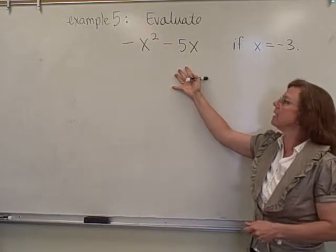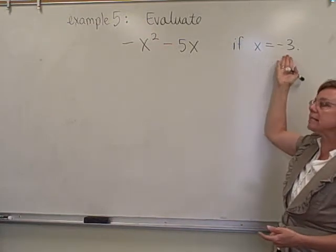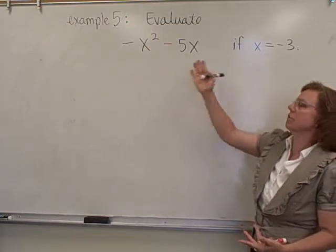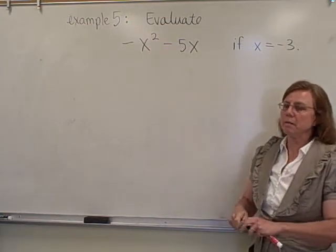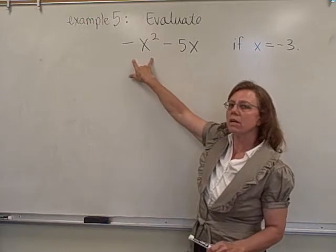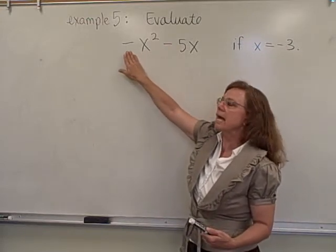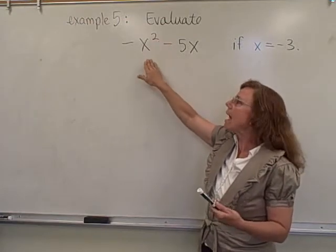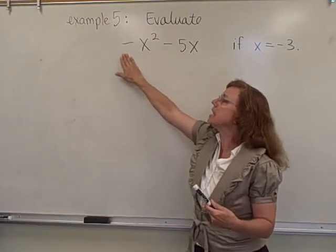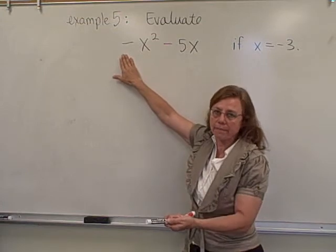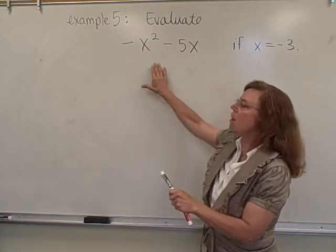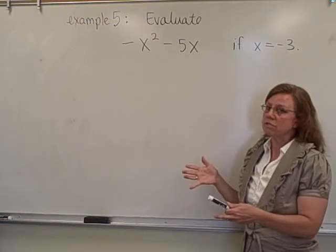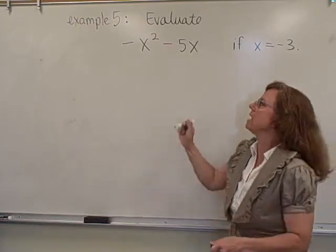So we want to evaluate this expression, see what the value of it is. So what we have to do is basically substitute in the value of negative 3 every time we see an x in this expression. Now this part right here is tricky for some students, because think of this as the opposite of x squared. So x has to be squared, and then we're going to make it negative or take the opposite of it. And so to show that we're squaring x, the number negative 3, you have to use parentheses when you write this,